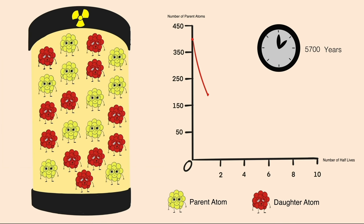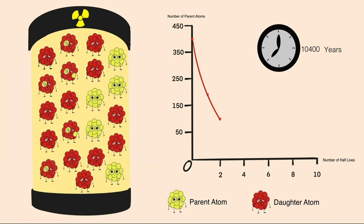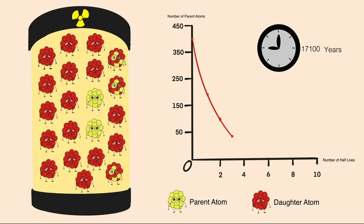As time carries on, nuclei carry on decaying, but it's happening less often until after two half-lives, the number of unstable nuclei have halved again, leaving only 25% of the original unstable nuclei remaining. We can see the number of decays happening is decreasing even further — or the activity of the source is decreasing as time goes on. We can also say that half-life is the time taken for the activity of a source to decrease by half.